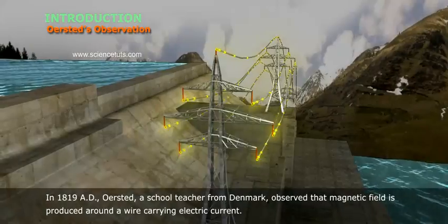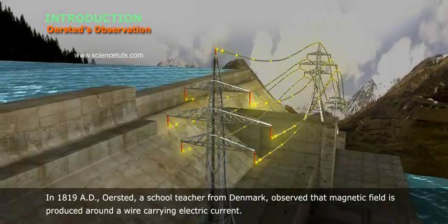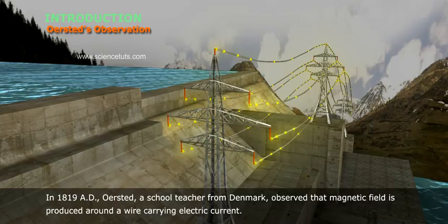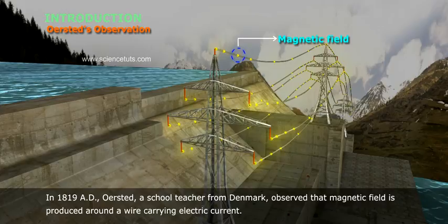Oersted's Observation. In 1819 AD, Oersted, a schoolteacher from Denmark, observed that magnetic field is produced around a wire carrying electric current.